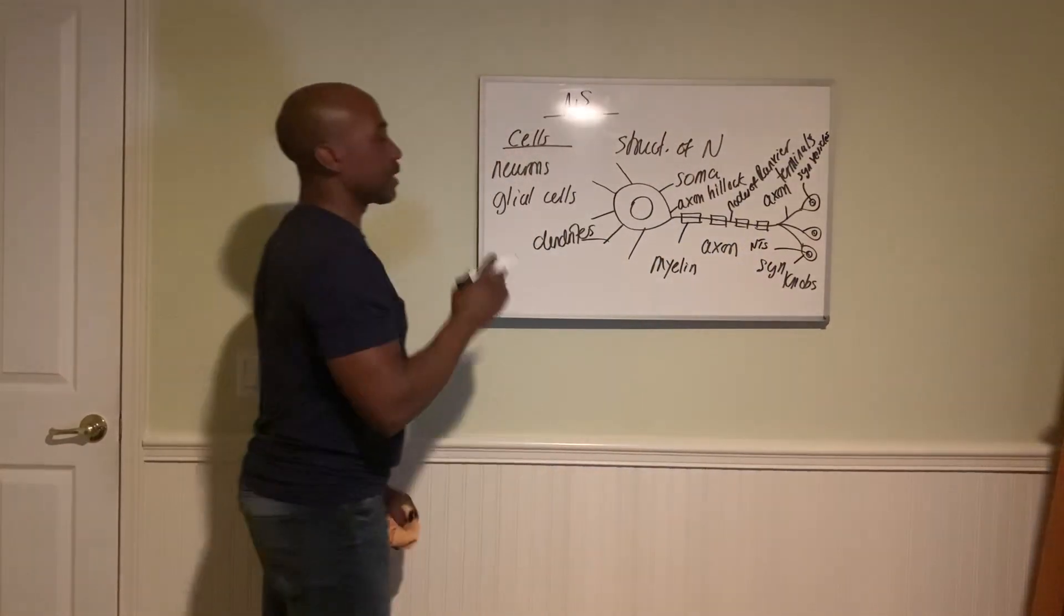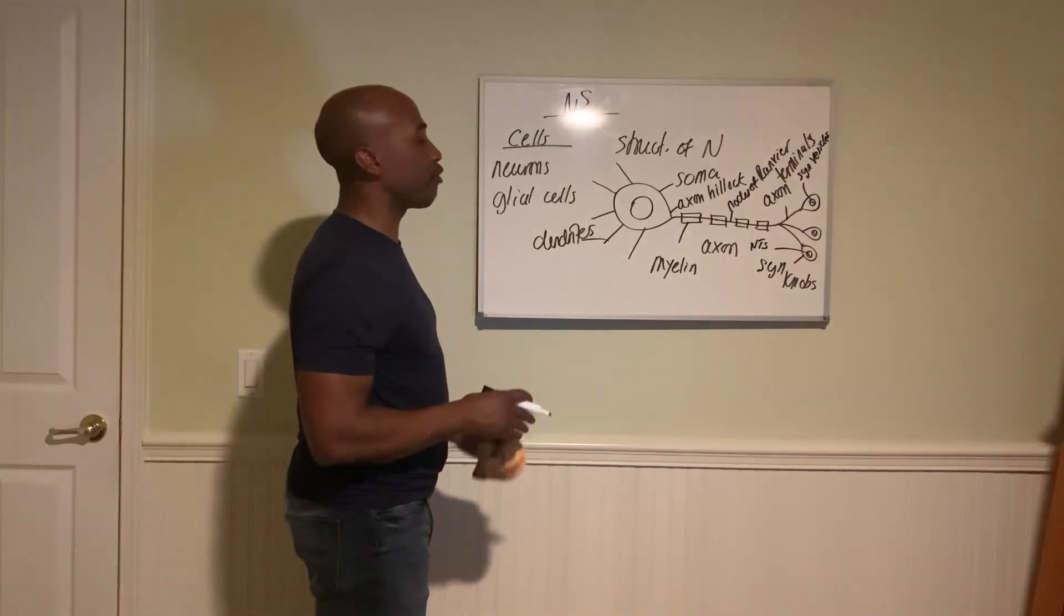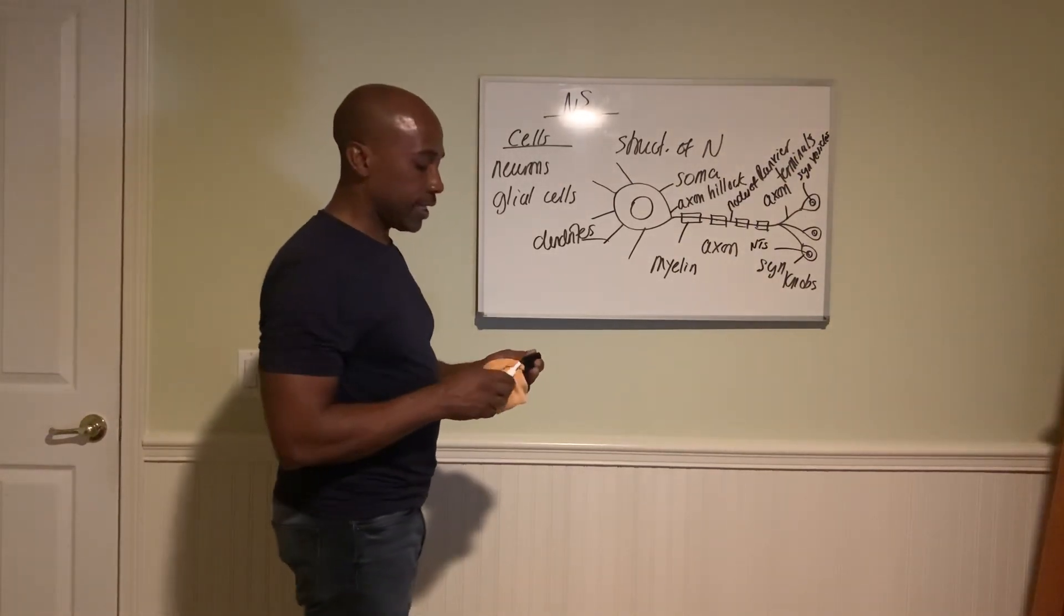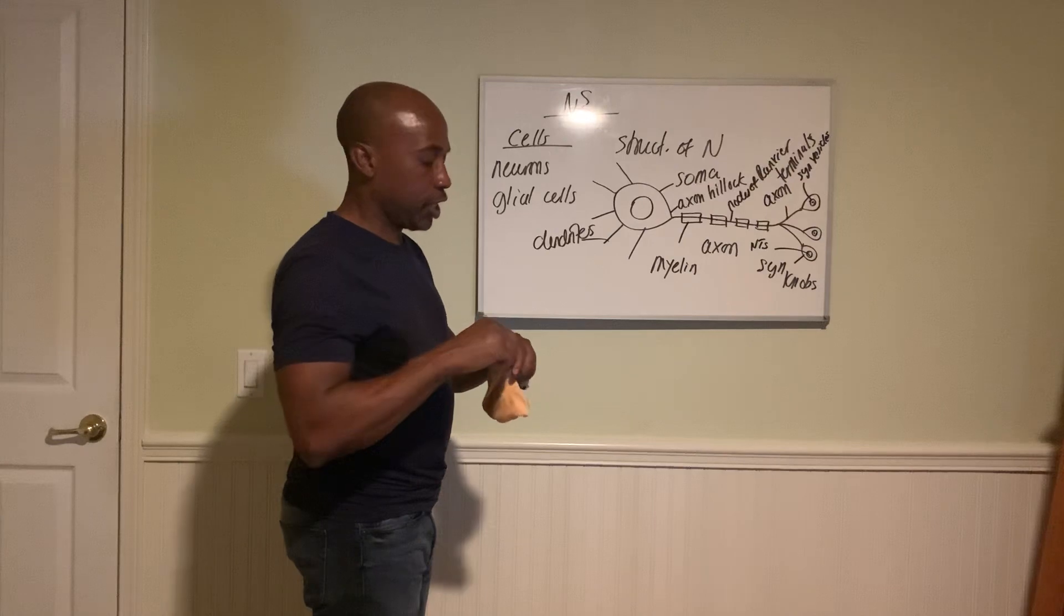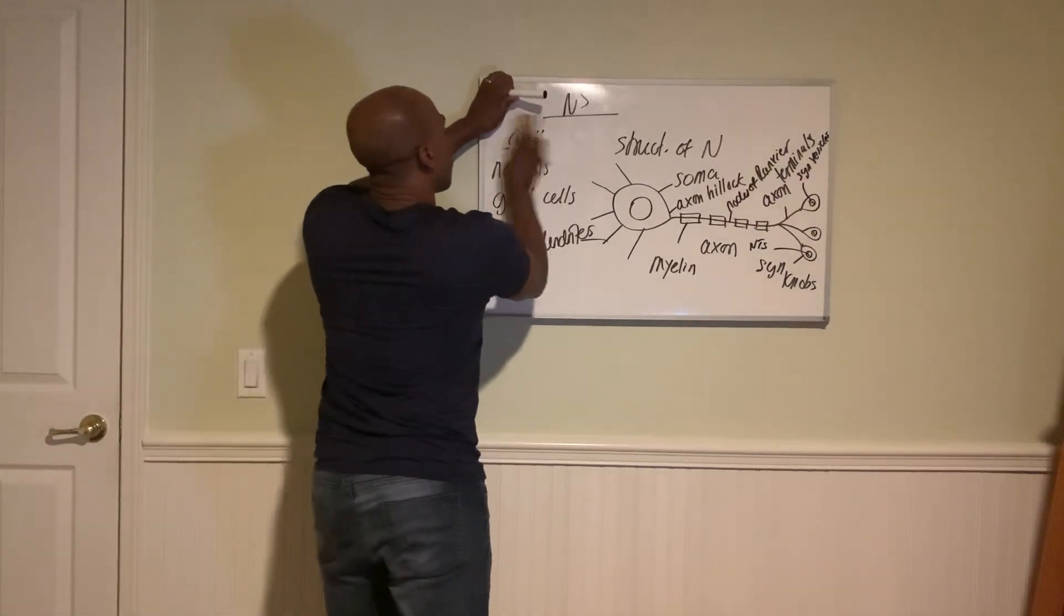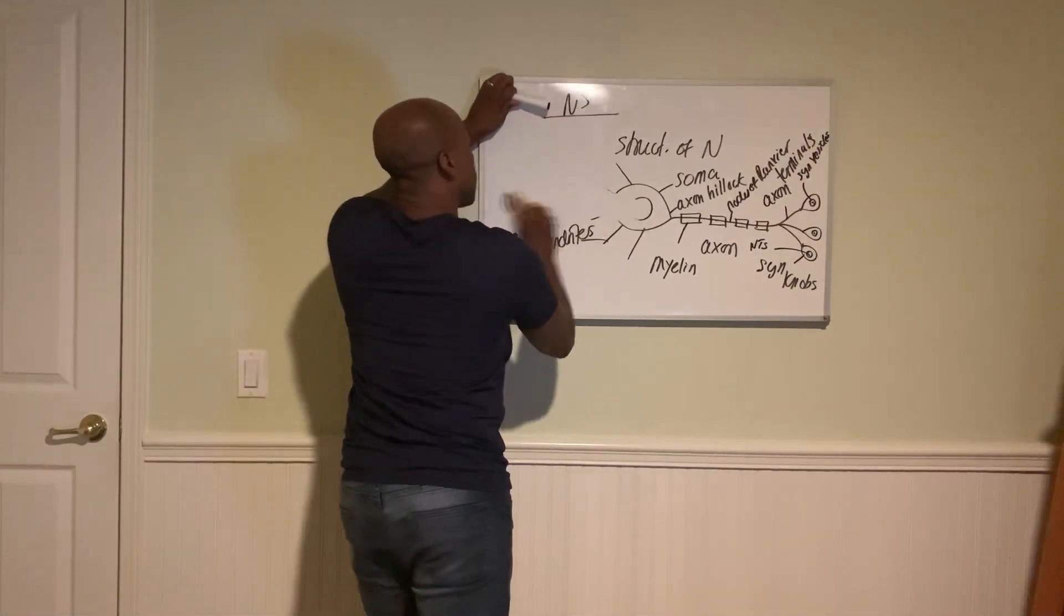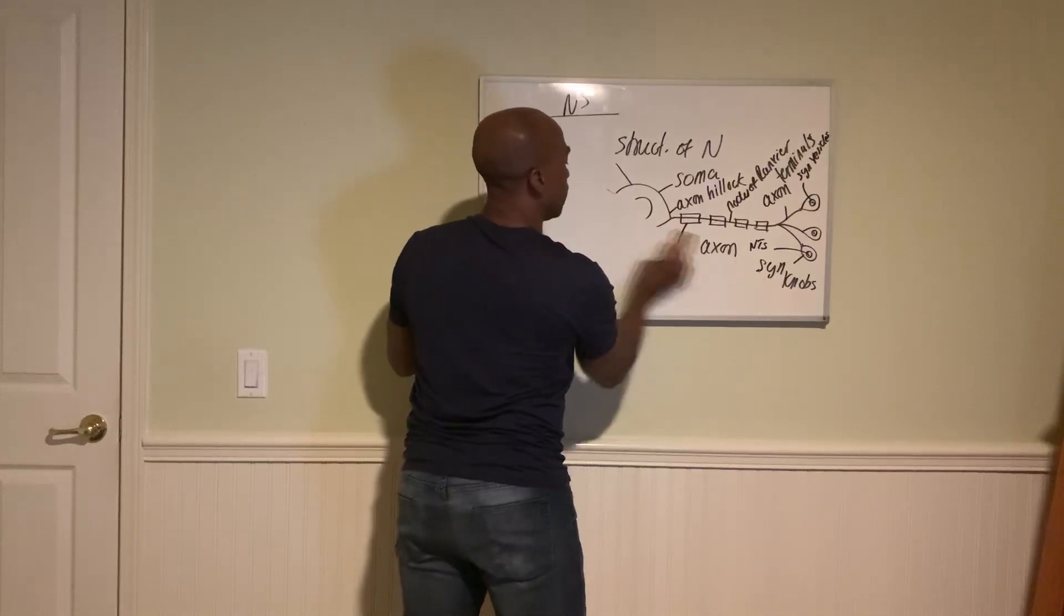All right, so that's a typical neuron. Now we're going to look at the different structural types of neurons that we have. There are three structural classes of neurons in the nervous system.